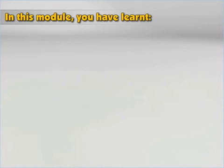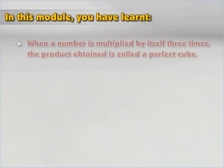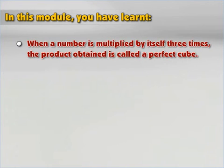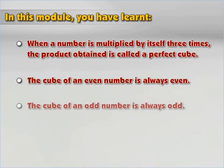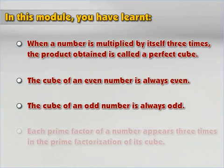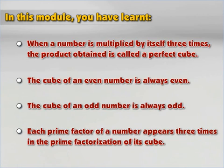In this module you have learnt: when a number is multiplied by itself three times, the product obtained is called a perfect cube. The cube of an even number is always even. The cube of an odd number is always odd. Each prime factor of a number appears three times in the prime factorization of its cube.